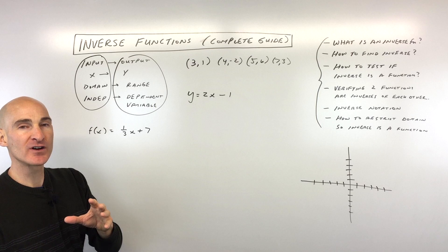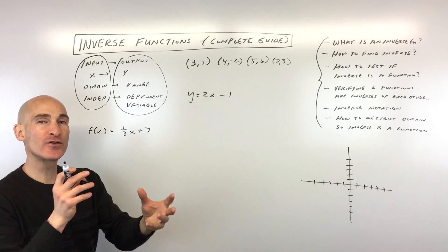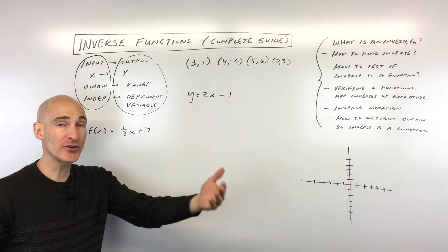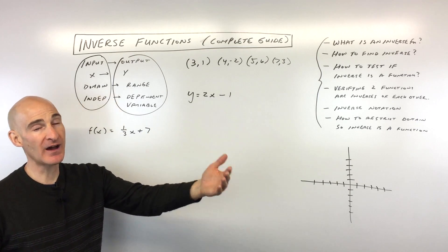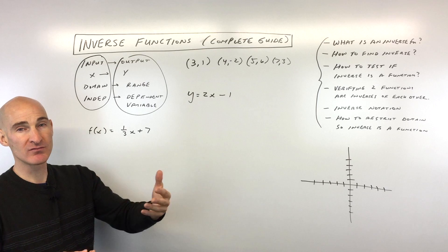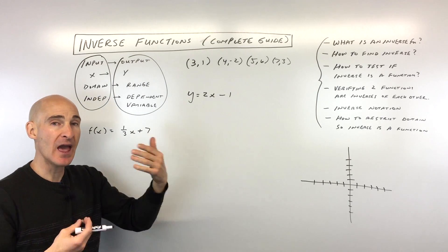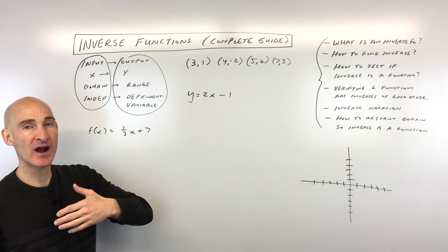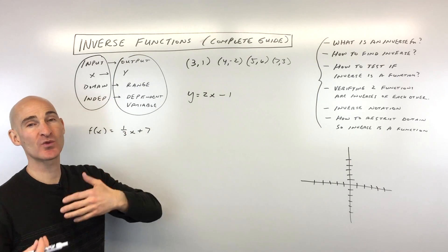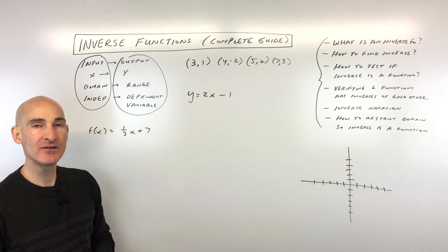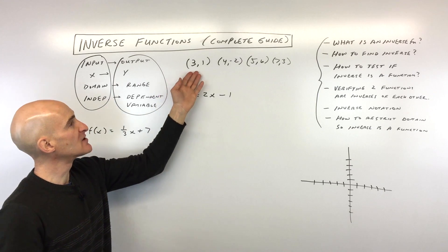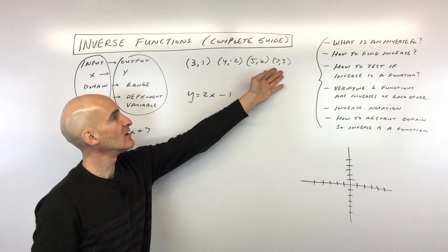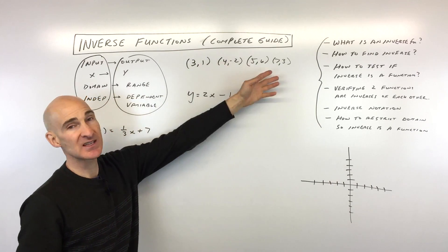When we talk about inverse functions, what we're doing is reversing that process. Some examples: if you multiply by two and then divide by two, you're reversing that process. If you add three and then subtract three, you're reversing that process. If you square something and then take the square root, those are all examples of inverse functions. The simplest example your teacher may give you is: what's the inverse of this data set here?